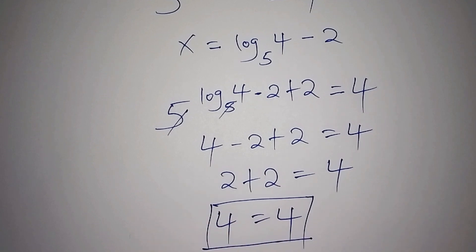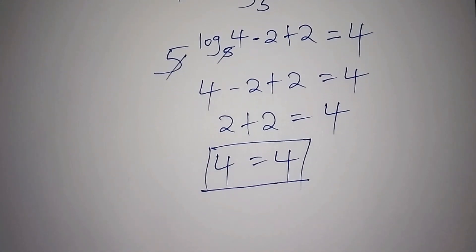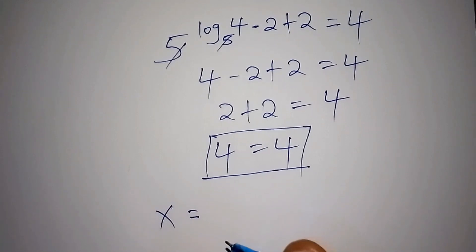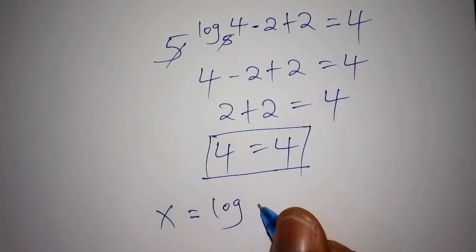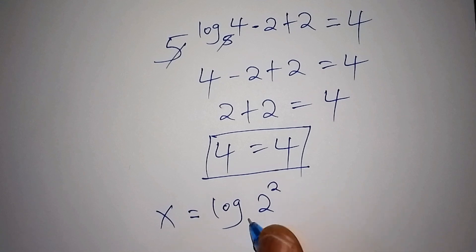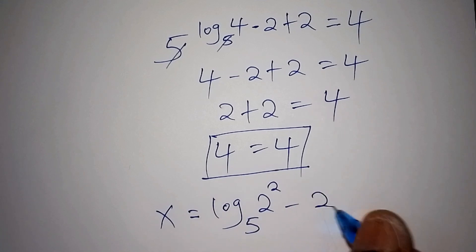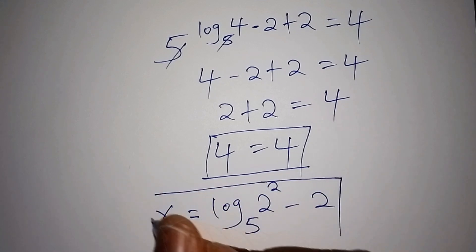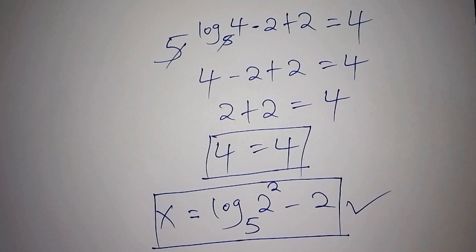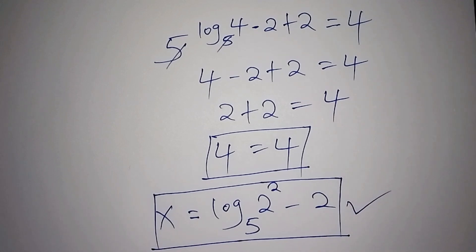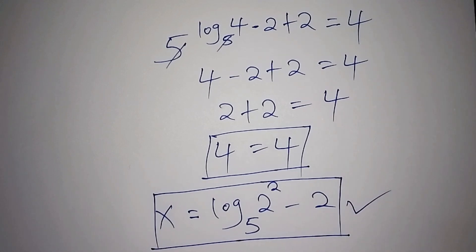The value of x is equals to log of 2 to the power of 2, base 5, minus 2. Let's stop there. If you really enjoyed this video, remember to subscribe to this channel if you have not, and please like the video so that it can reach the majority of people. See you in our next video.